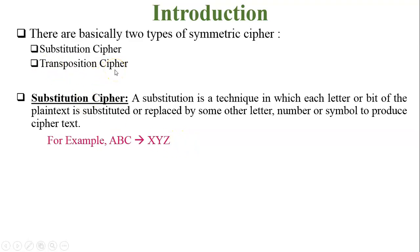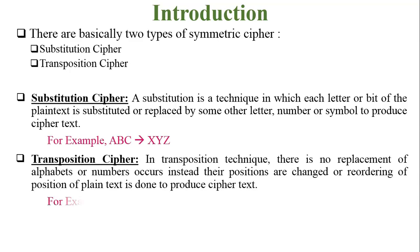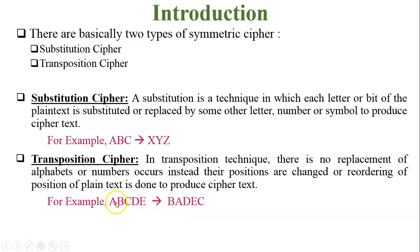In transposition cipher, there is no replacement or substitution — only the position of the given letters or characters is changed. For example, ABCDE is the given plain text; changing the position of these letters generates the cipher text. There is no replacement or substitution involved.